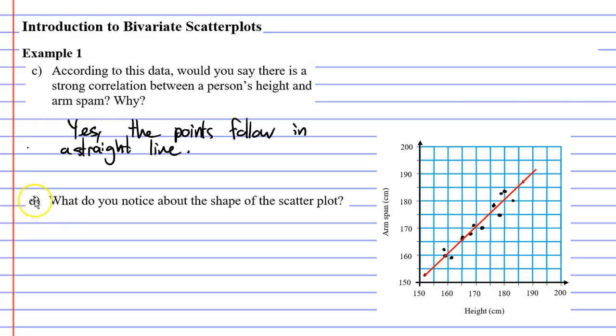Now moving on to question D, it says, what do you notice about the shape of the scatter plot? And for the shape, I would say that it makes a linear graph. Remembering that linear means a straight line.